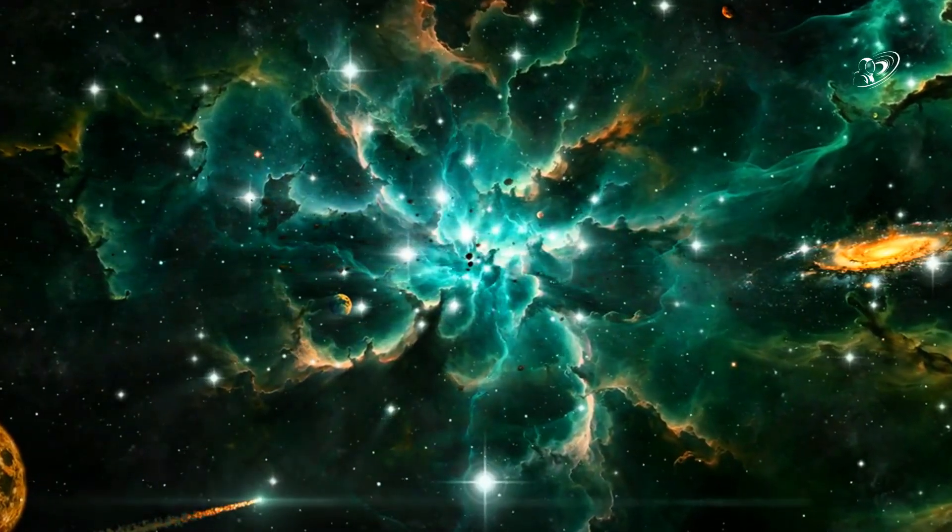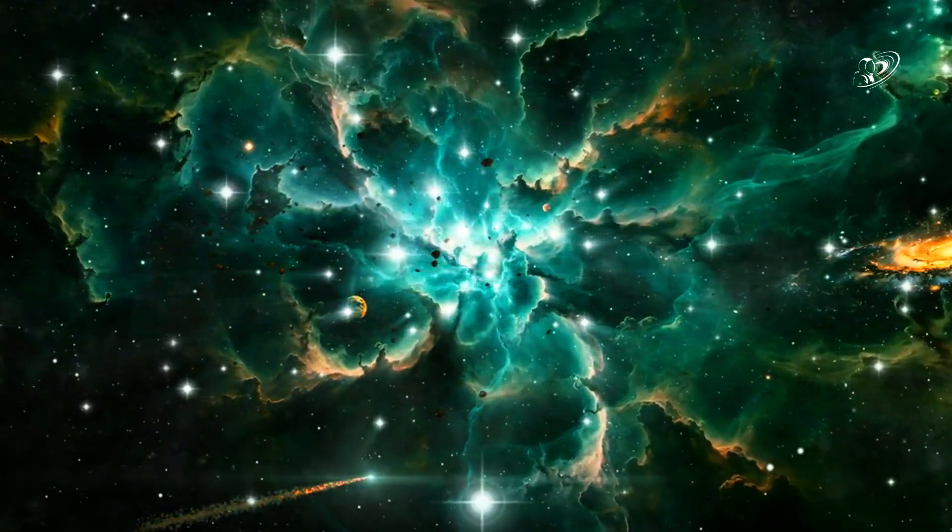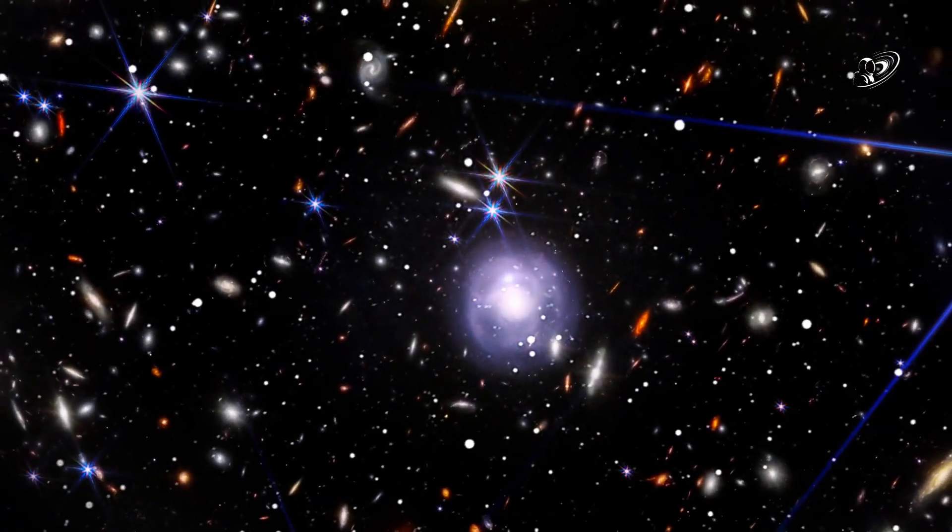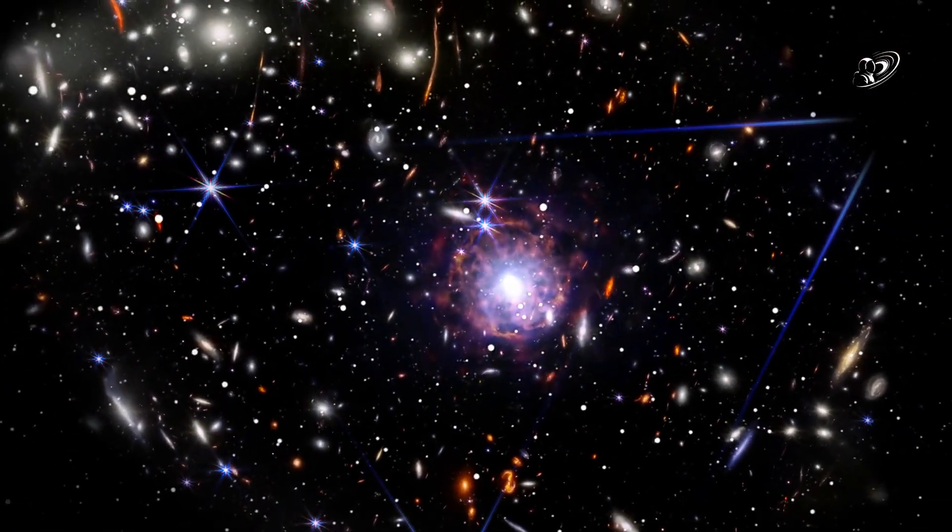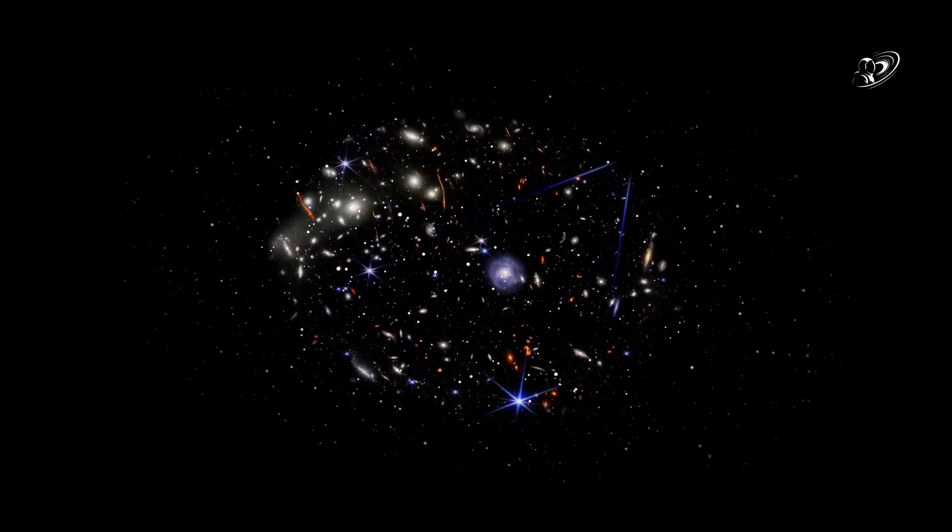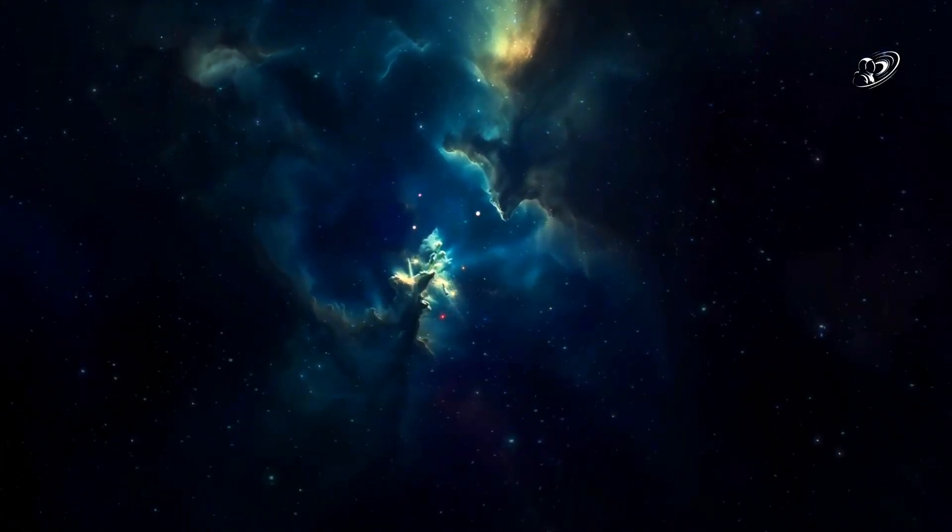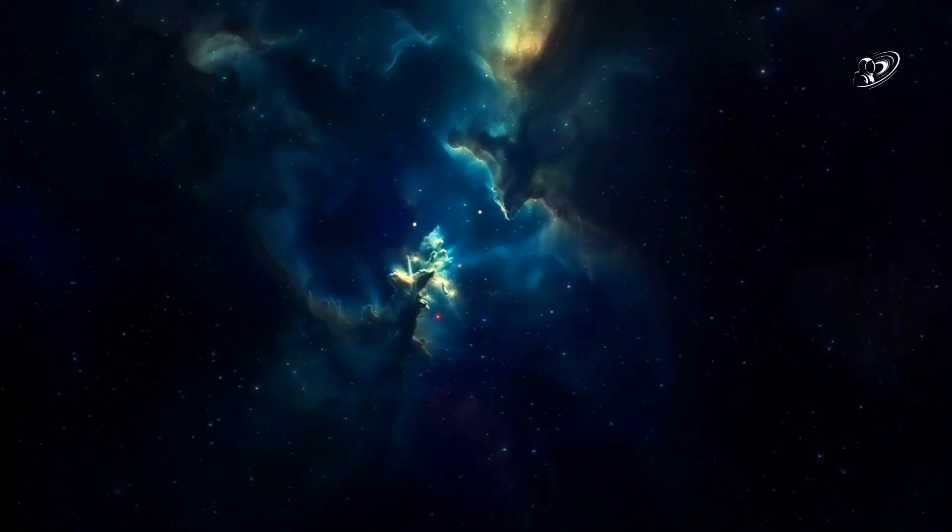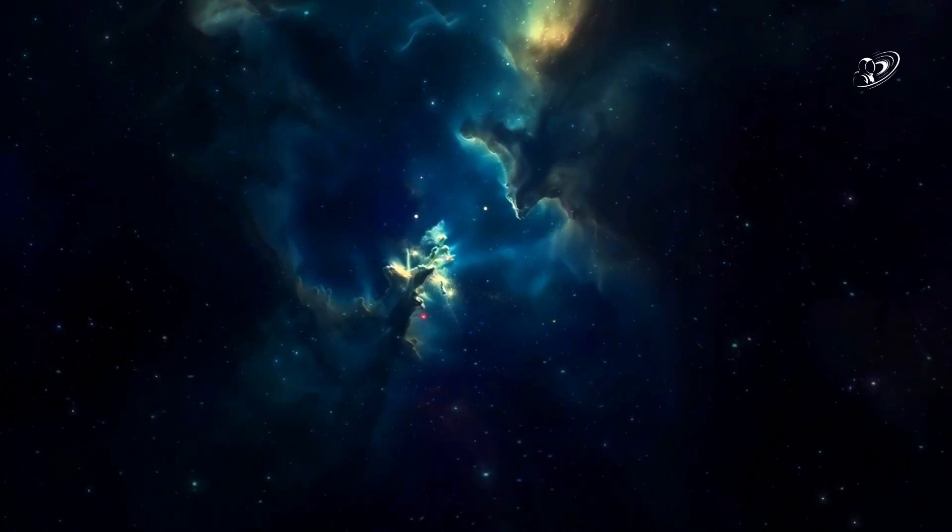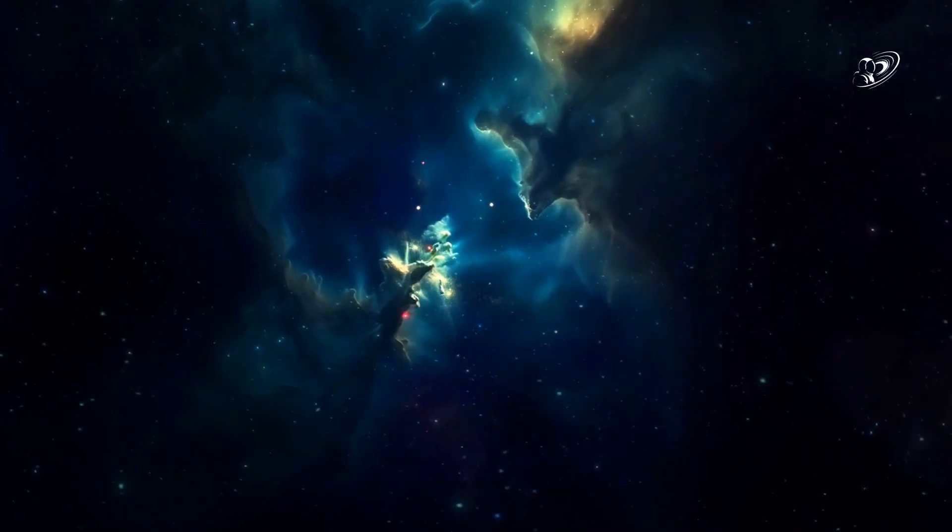And then there is dark matter, the shadowy counterpart to ordinary matter. It does not glow, it does not shine, it cannot be touched. And yet without it, galaxies would fly apart like leaves in a storm. It binds the cosmos with invisible threads, shaping the large-scale structure of everything we know. It outweighs the matter we can see by a factor of five, and yet we are blind to it. Imagine standing in a room filled with invisible pillars holding up the ceiling, knowing they are there, but never able to see or touch them. That is our relationship with dark matter.